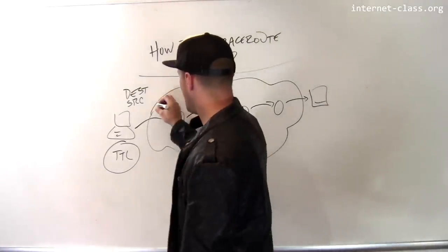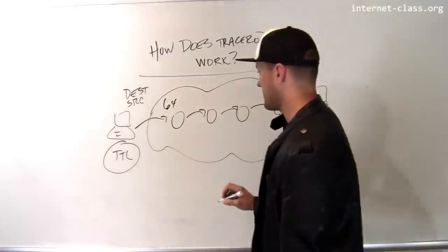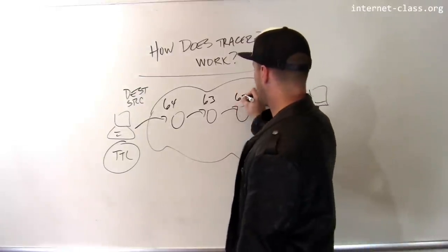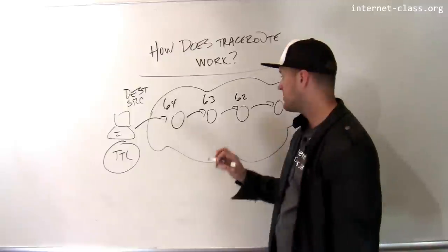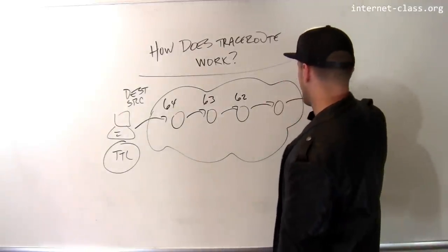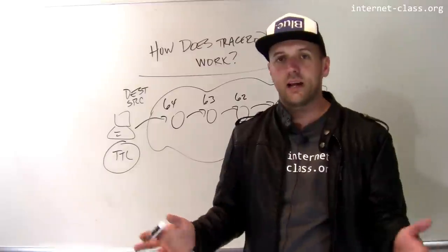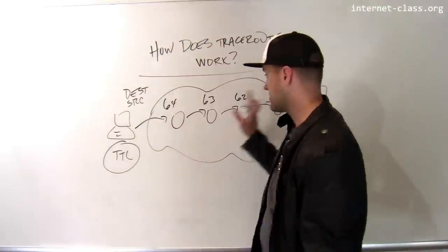So what would happen is this router would see a time to live of 64, it would send it on to this guy who would see a time to live of 63, it would send it on to this guy who would see a time to live of 62, etc. And by the time it gets to the destination, maybe the time to live has been decremented by 12 or 13 or 20 or whatever, however many hops it took to get there.